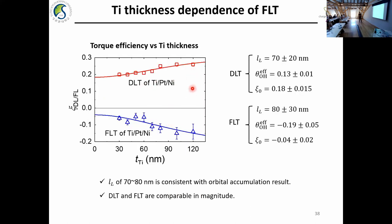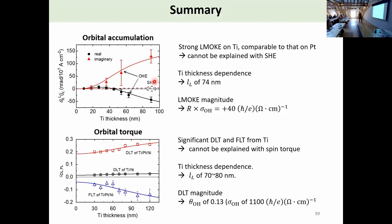In summary, we look at the orbital accumulation on titanium. The orbital diffusion length is quite consistent between measurements. The magnitude for orbital accumulation is surprising due to orbital quenching. But in the torque measurement, the quenching effect is not as significant, mostly because orbital accumulation behavior differs at interfaces. Thank you for your attention.